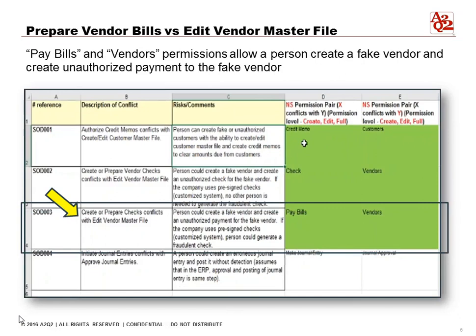In the next scenario, pay bills and vendors are permissions that allow someone to create an unauthorized payment — that's the pay bill — and also create a fake vendor. Similar to the previous situation, a person with both permissions could create a fake vendor and make a payment to it. This is especially dangerous if the company uses ACH or direct deposit and no check signer is needed, because the person can stage the payment and it will go directly to the bank. No one would be able to detect the fraud if this person had both permissions.